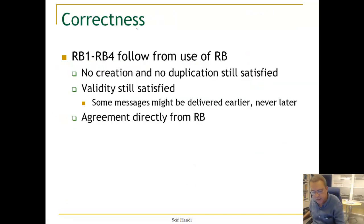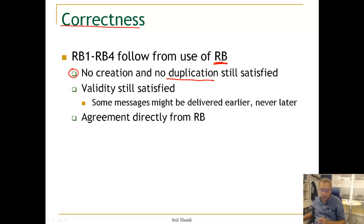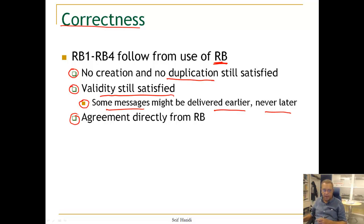For correctness, properties RB1 through RB4 follow from reliable broadcast properties. No creation and no duplication are still satisfied — no duplication specifically because of the 'delivered' variable. Validity is satisfied since some messages might be delivered earlier, but never later. Agreement — if a correct process delivers a message, all correct processes will deliver it — still holds, and messages may actually be delivered earlier.